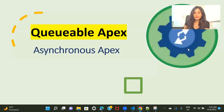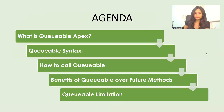Let's first go through the definition and understand what Queueable Apex is, then move ahead step by step covering the syntax, where and how we can use it. The agenda for this session is: what is Queueable Apex, what is the syntax, how to call it, what are the benefits of Queueable over Future Methods, and what are its limitations.